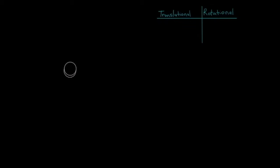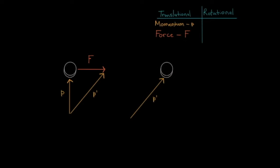Consider a hockey puck sliding along on a sheet of ice. As it slides freely it has momentum, which we denote with the letter P. Now if a force is applied to that puck — such as getting bumped by a hockey stick or another puck — its momentum will change and it will have a different direction. As a result, the hockey puck will start traveling in that direction. We'll call this new momentum P'. The momentum changed to follow the force, and that's really the essence of this video — the momentum will always follow or chase the force.